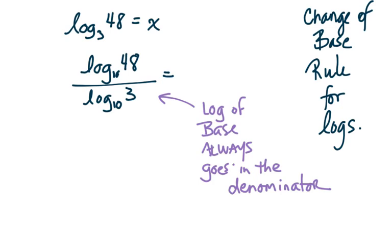Once you hit the equals button, which a lot of people forget, we're going to get a number like 3.52. So that means that 3 raised to the 3.52 power is going to equal 48 at the end of the day.